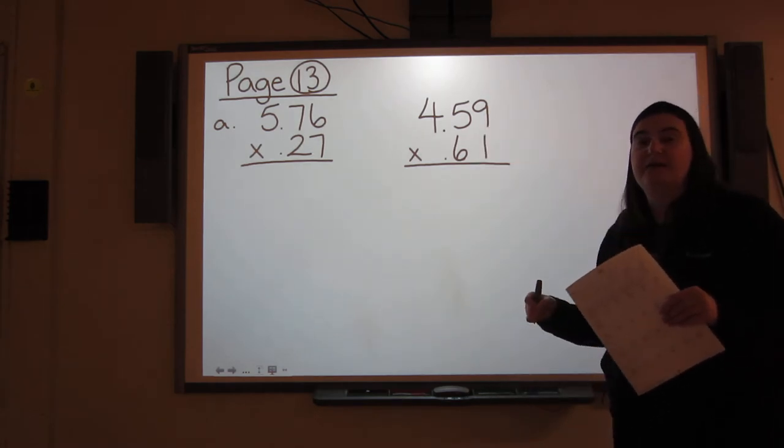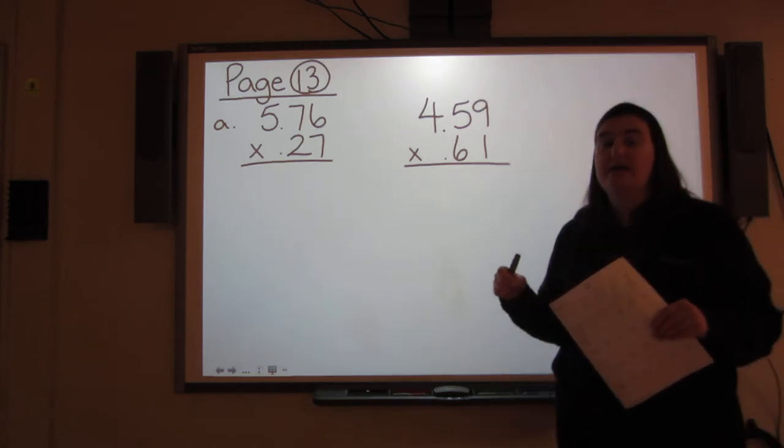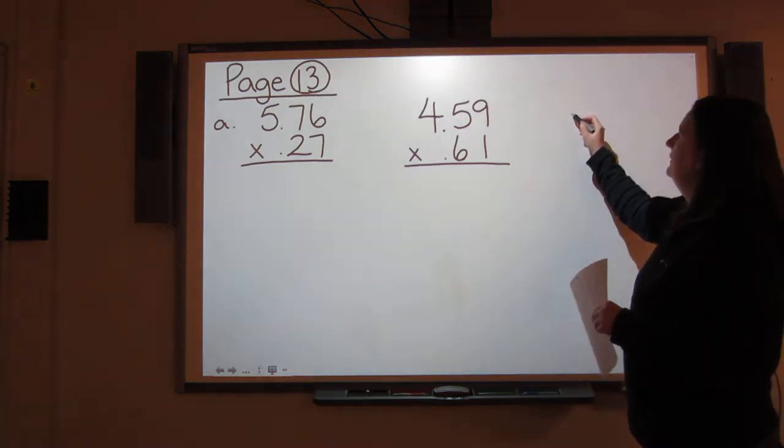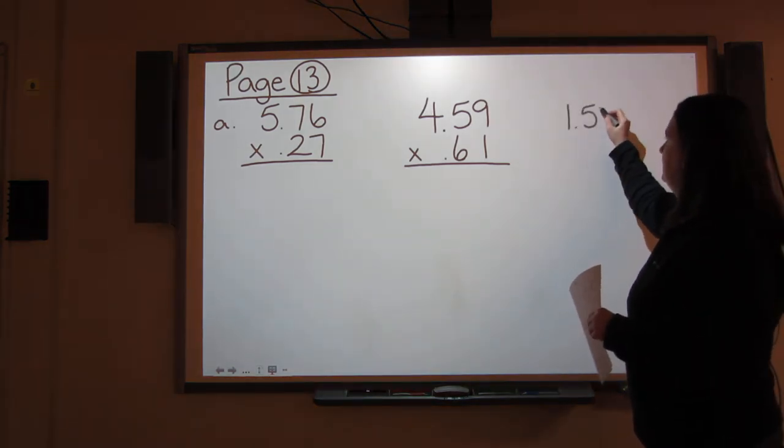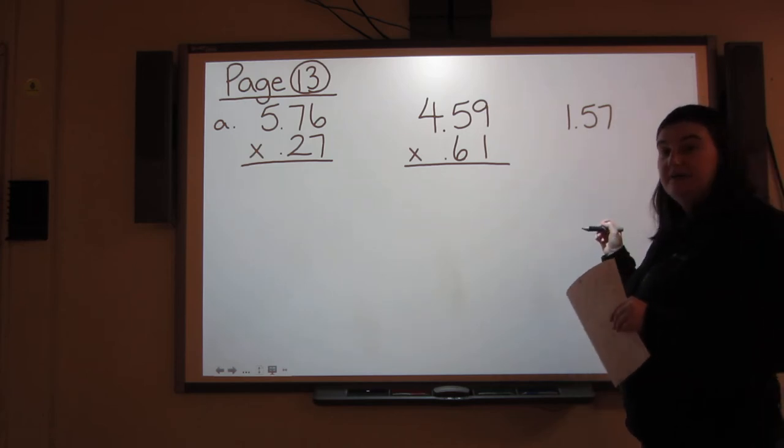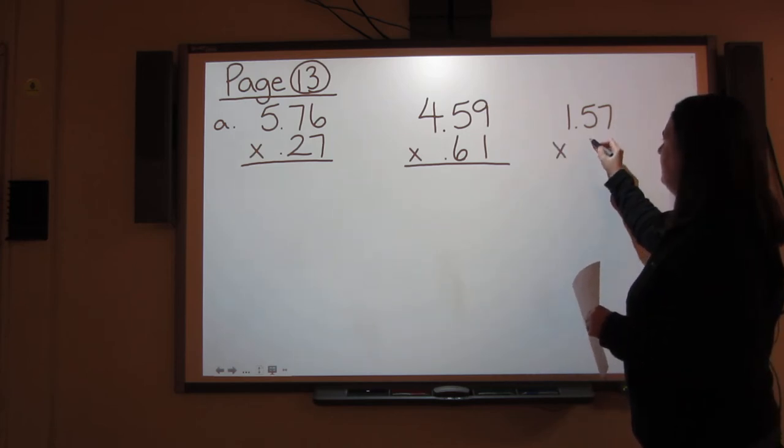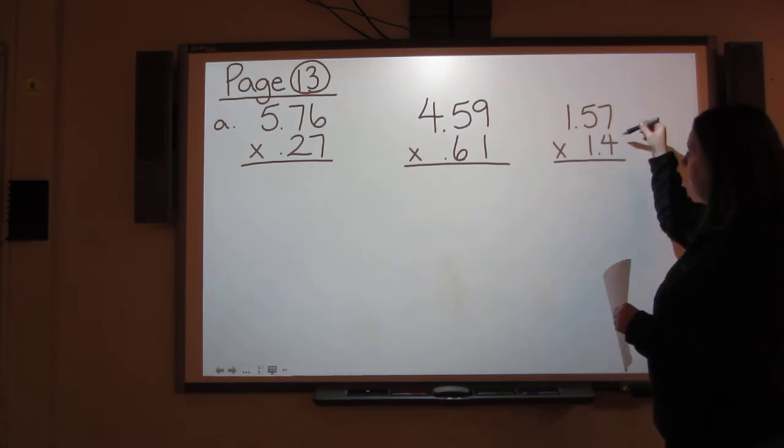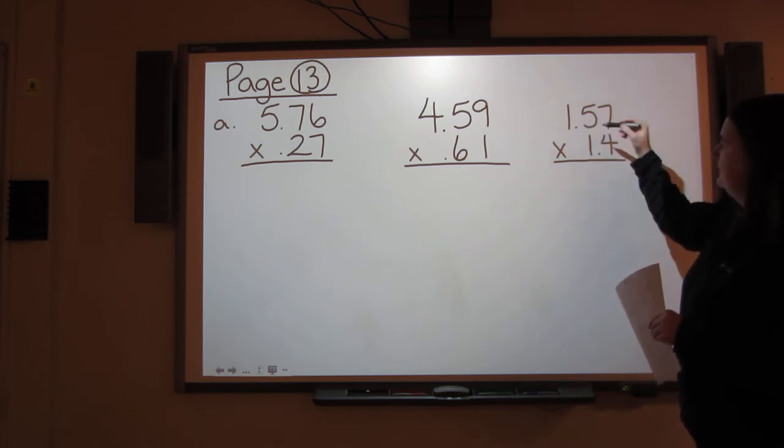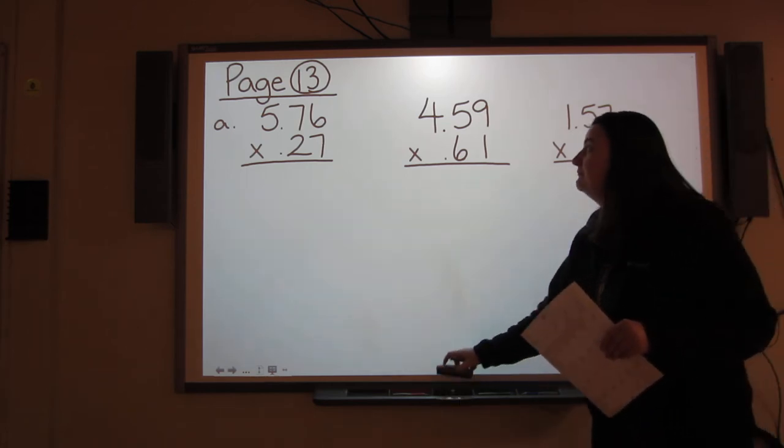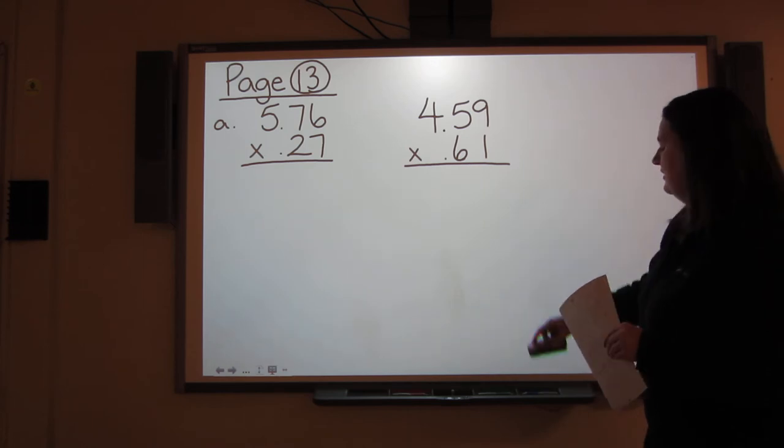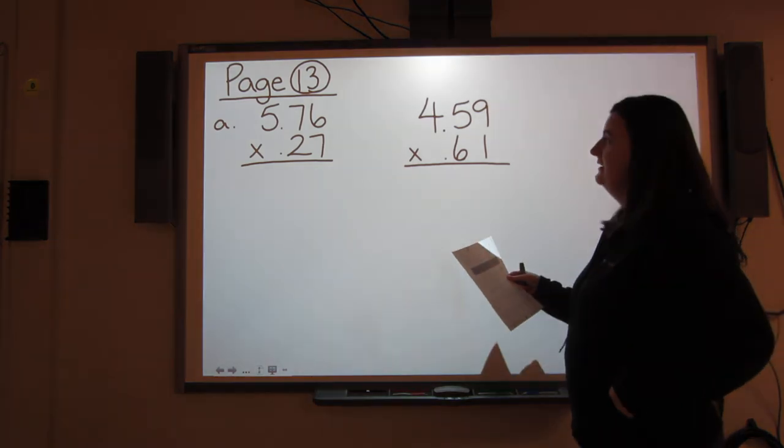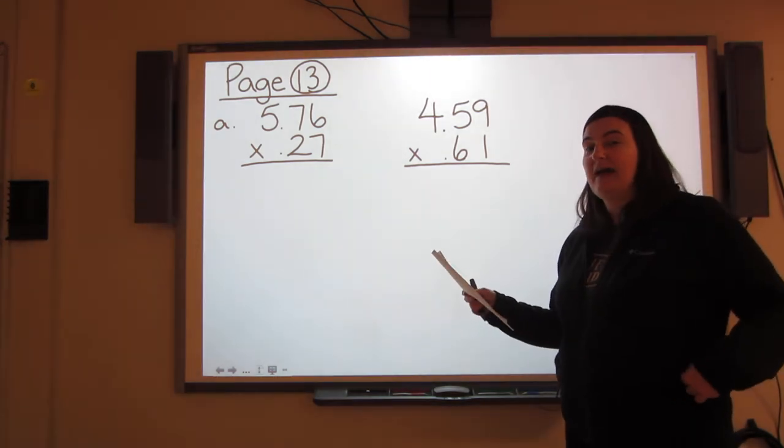But please remember that you do not actually have to line up the decimals when you're multiplying. If I had an example of 1.57 and I multiplied it with 1.4, this is perfectly acceptable. Just keep that in mind while you're answering these questions. Because all the questions on pages 13 and 14, the decimals are lined up, but they don't have to be.